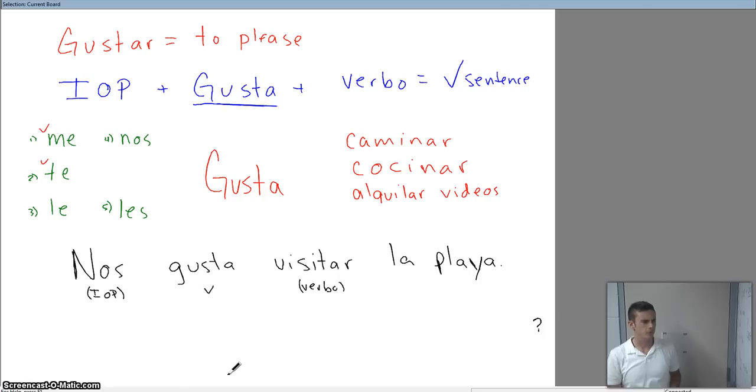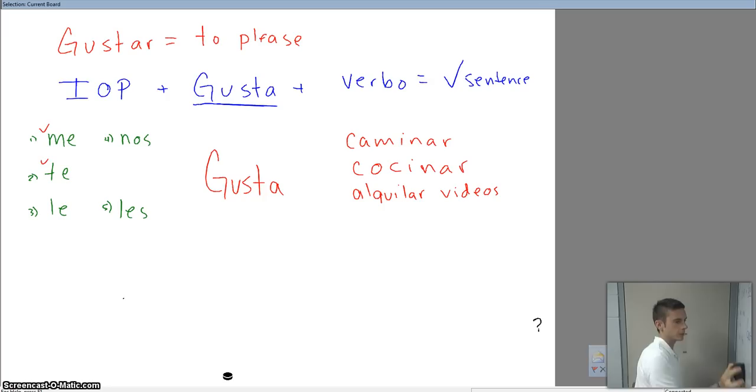What happens if you happen not to like something? What if you don't enjoy cooking or renting videos? As you've seen in previous lessons, anytime we make something negative, we add a no in front of our verb. What we have to do here is put no in front of our IOP.